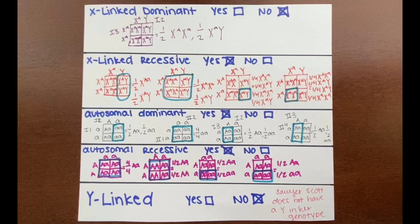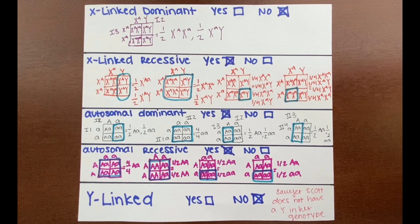This was my test work that showed that the modes of inheritance for this pedigree were X-linked recessive, autosomal dominant, and autosomal recessive, outlining the offspring that were actually seen in the pedigree.